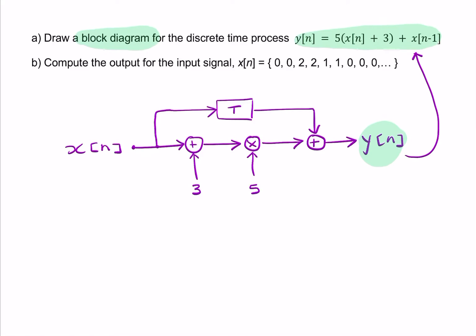We can just check that again. As we go through from left to right, that's my input x of n, I have 3 added to it, that's the plus 3 there. It's then multiplied by 5, that's my 5 right there. Then I have a delayed version of the input added to it, that's my delay block there. x of n goes in, what comes out is the delayed version. So that's the first part of the question.